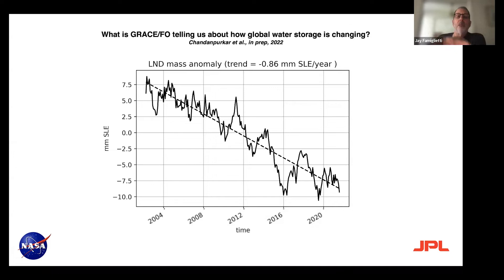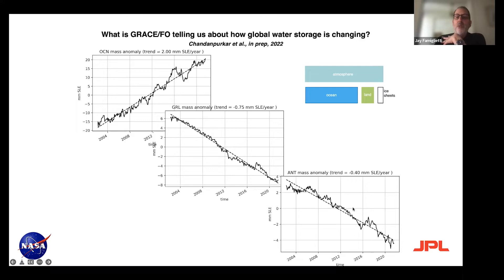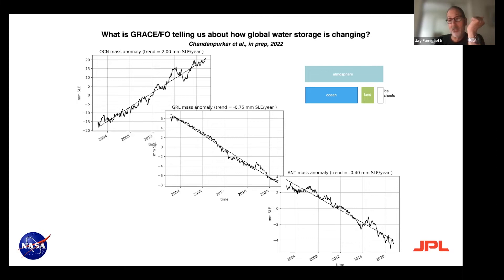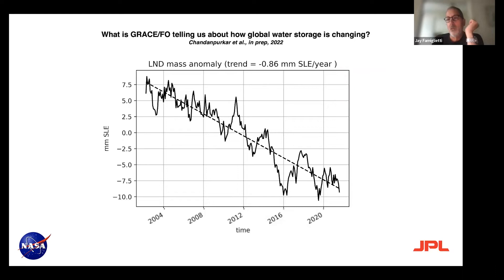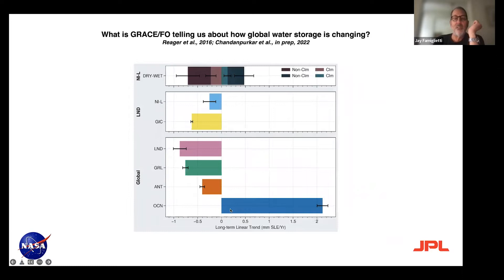That minus 0.86 is actually bigger than Greenland and bigger than Antarctica. So for the first time, the land is contributing more water — through glaciers melting, permafrost melting, snow melting — contributing more to sea level rise than Greenland and Antarctica. That's pretty serious. We're working on trying to figure out where it's all coming from and doing these IPCC-type analyses.